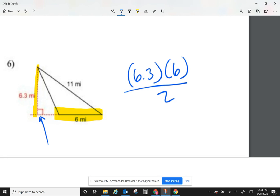6.3 times 6, that gives me 37.8. Divided by 2, my answer is 18.9. Don't think you have to use every number. There's an 11. I never used it. I'm just going to go length times width, divided by 2. Length and width are the two numbers that intersect at 90 degrees.